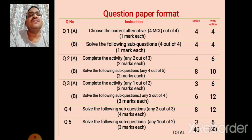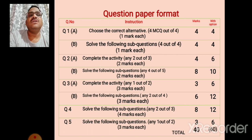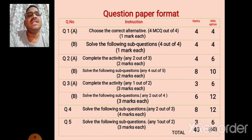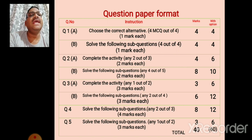Now we look at the question paper pattern. In Math First and Math Second there are five questions given. In question number 1A, four MCQs are given and you have to solve all four MCQs, one mark for each. Then question number 1B, solve the following sub-questions: four questions are given and you have to solve all four sub-questions, one mark for each. That is total question number 1 is of eight marks.